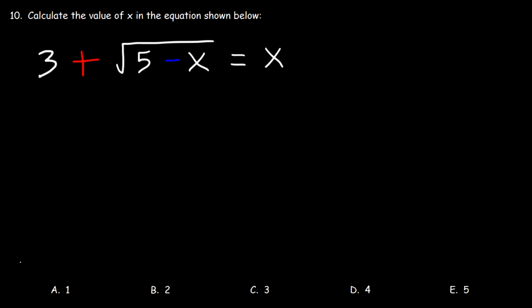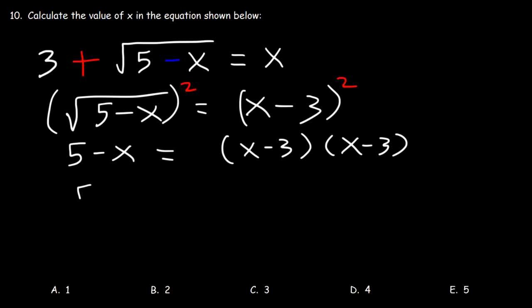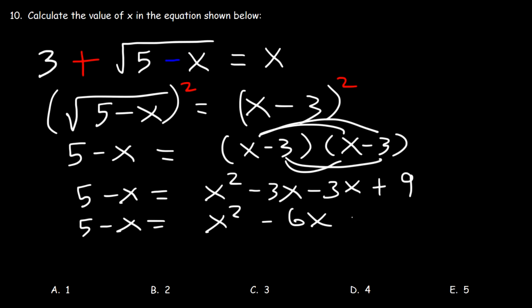Number 10. Calculate the value of x in the equation shown below. What you don't want to do is square both sides right away, because you would have to FOIL 3 plus radical 5 minus x, which will generate another radical. Instead, move the 3 from the left side to the right side, then raise both sides to the second power. This gets rid of the radical on the left, leaving just 5 minus x. On the right side, we FOIL x minus 3 times x minus 3: x times x is x squared, x times negative 3 is negative 3x twice, and negative 3 times negative 3 is positive 9 — combining the middle terms gives negative 6x.